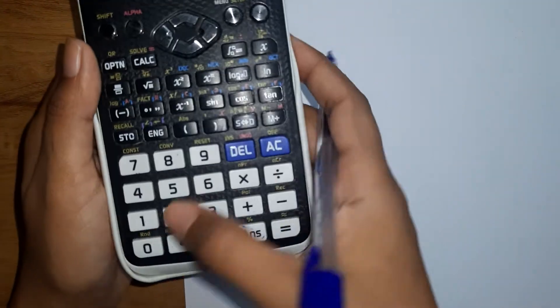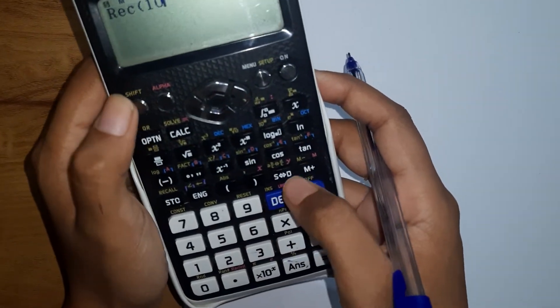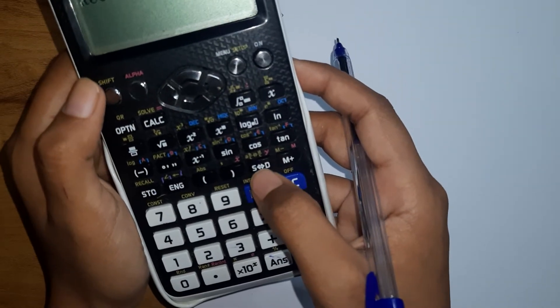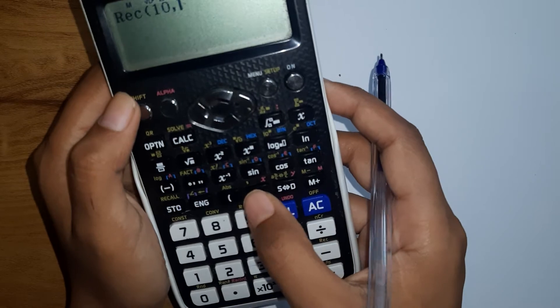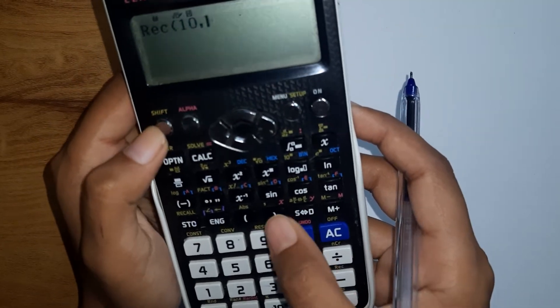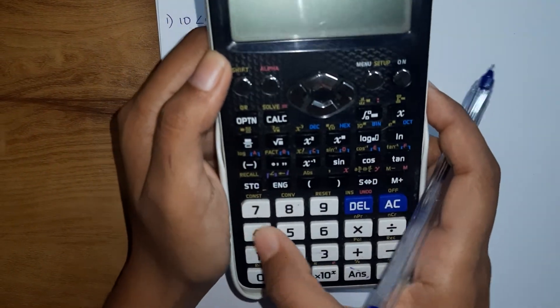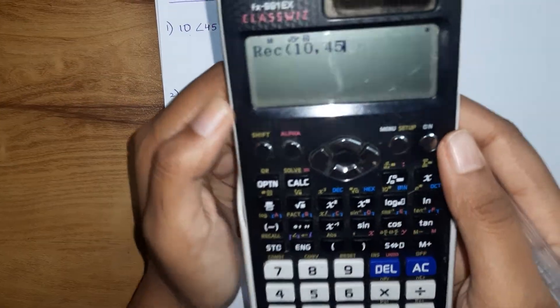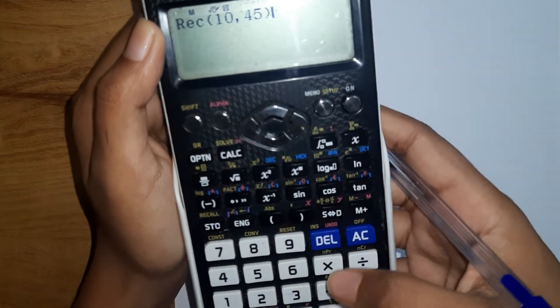So write 10, and shift, this is comma. Shift and this bracket symbol, if you press shift and this bracket symbol you get comma. And what is our angle? 45. So directly write 45, no need of mentioning that specific angle or anything. Close the bracket.